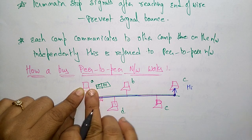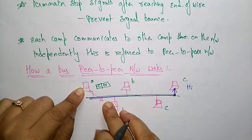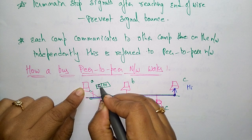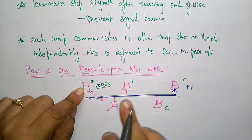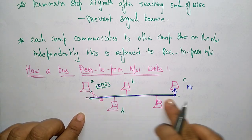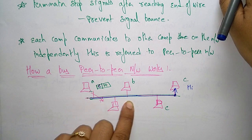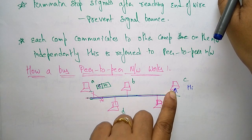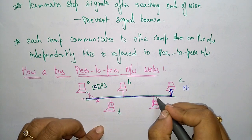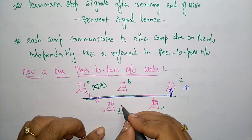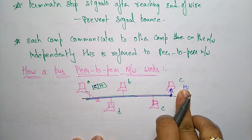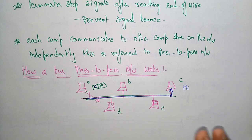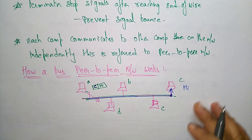A message is sent from one computer to another with the address of the destination computer attached. The message is broadcast to all computers on the network until the addressed computer accepts the message. Every computer sees it, but only the one with address C will accept it because only C's address is mentioned.